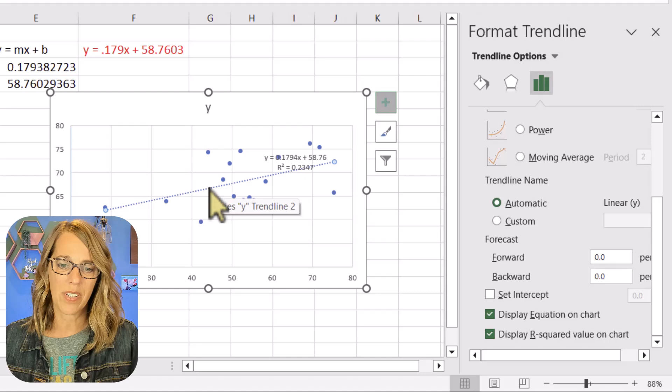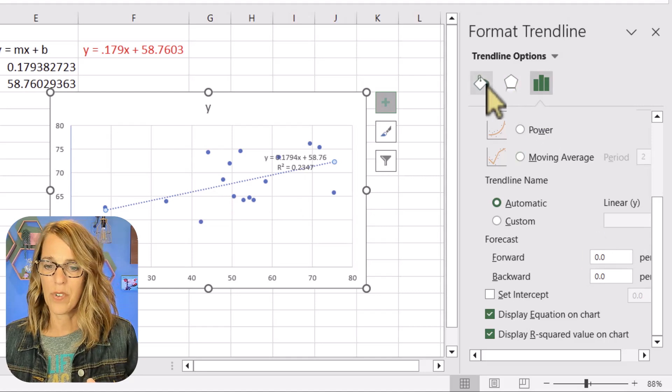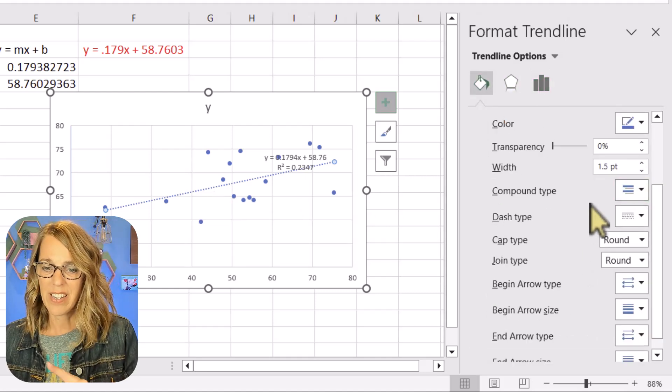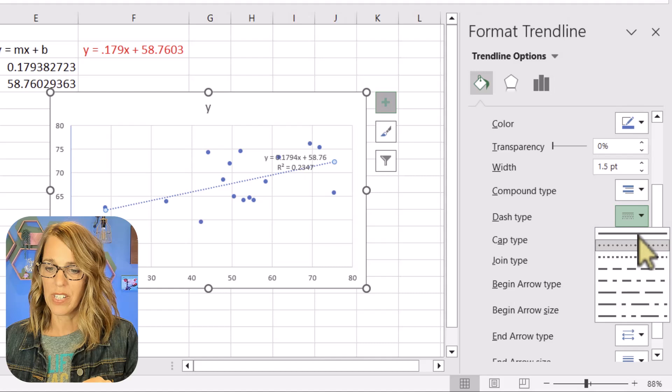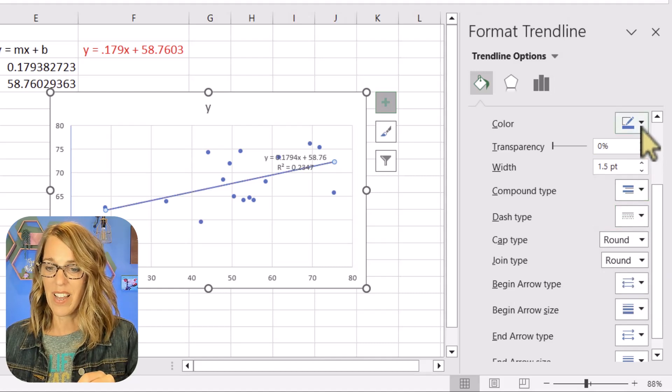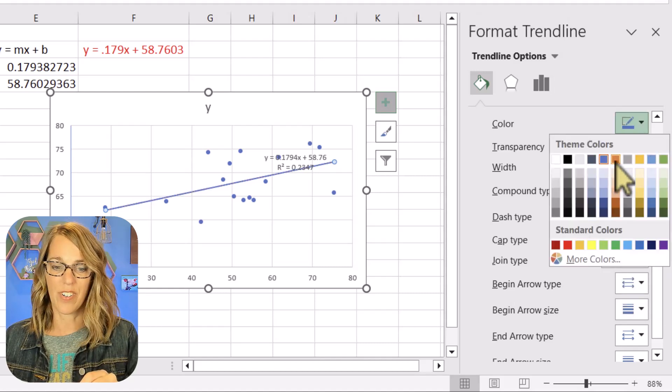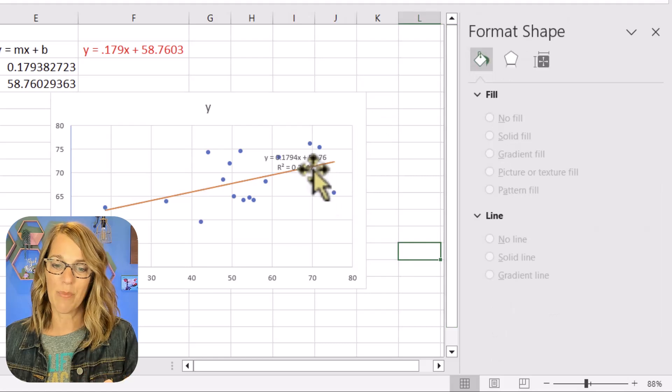Now you can play around with this as well. You can double click the line and then go over to options and I want this not to be dashed. Let's make this a solid line. I also want a different color. I'm going to make this an orange color. Okay so it's looking so much better.